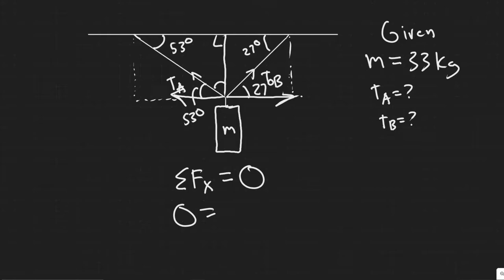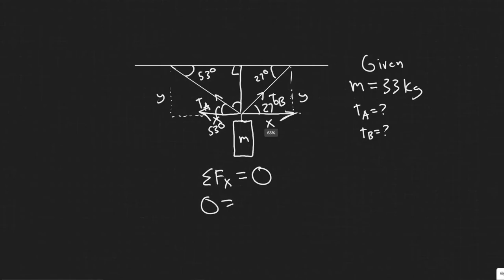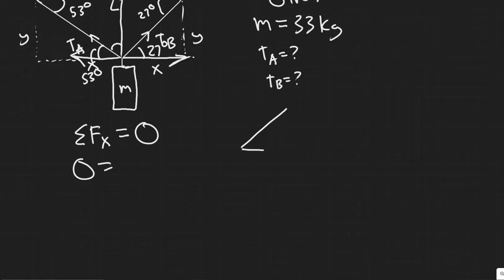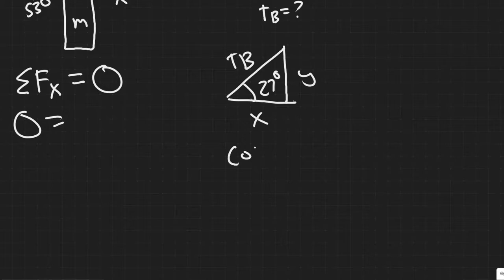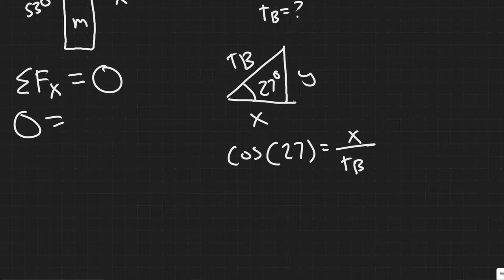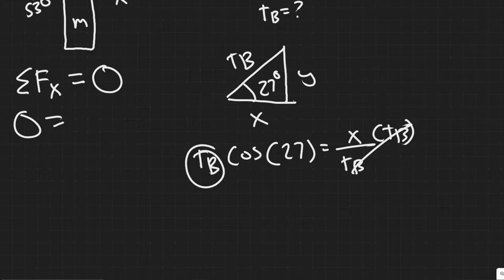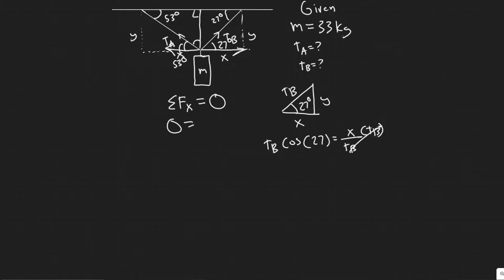Now let's find the x components. If you imagine this like a triangle, this side and this side are the x components, and this and this are the y components. I'm redrawing the triangle here: this is T_B, this is your x component, this is your y. The angle is 27 degrees. To find the x component, you use trig. Cosine of 27 equals adjacent over hypotenuse, which is the x component divided by T_B. Multiplying both sides by T_B, the x component of T_B is T_B times cosine of 27.